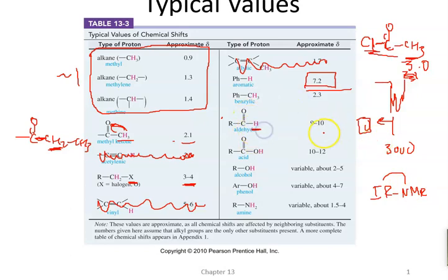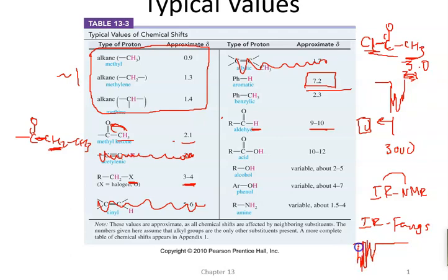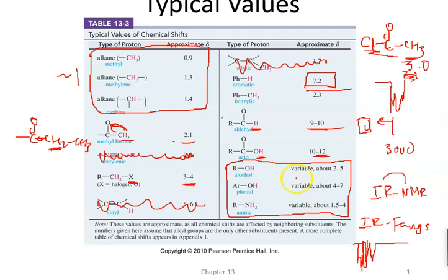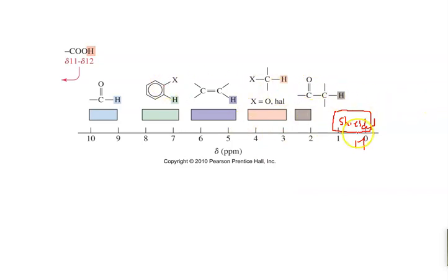Aldehyde hydrogens show up between 9 and 10 — essentially nothing else appears in that range. In IR, we identified aldehydes by the 'fangs.' Sometimes those were hard to see in the aliphatic region. But if you look at the NMR and see a peak at 9 to 10, you have an aldehyde. Carboxylic acid hydrogens are roughly around 12. Alcohols and amines sometimes show up and sometimes don't — it depends on the molecule, and you need other information to confirm those.